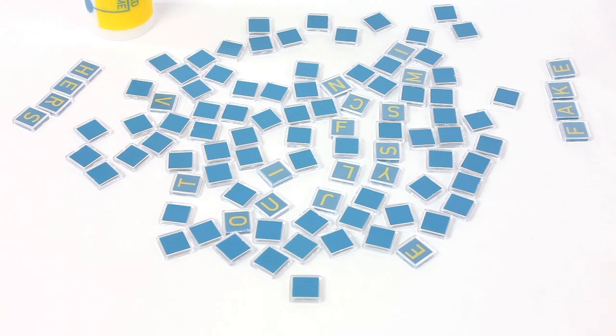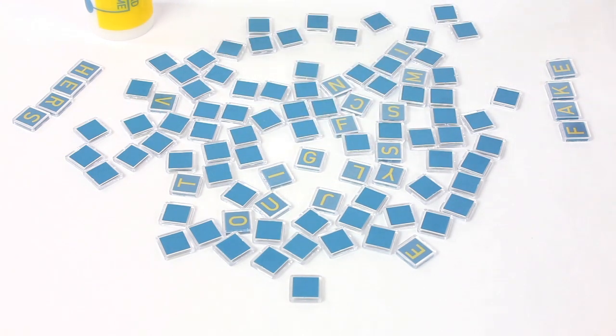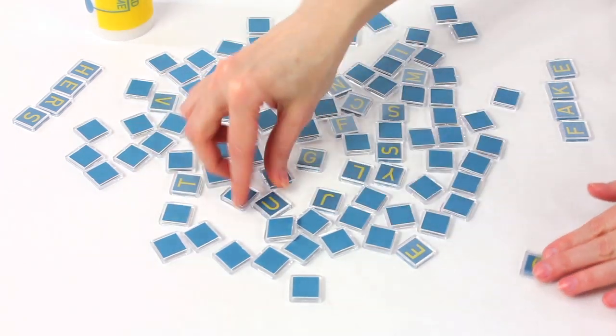The object of the game is to spell as many words as you possibly can. On each person's turn, they're going to turn over one of the letter tiles. Everyone at the table is looking for words to pop up. As soon as you see a word pop up, you can shout it out. So I could say out, and I could take these three tiles.